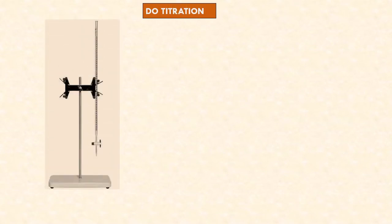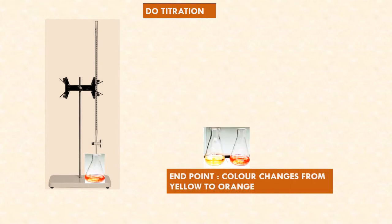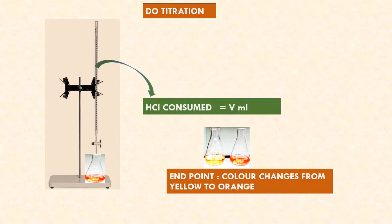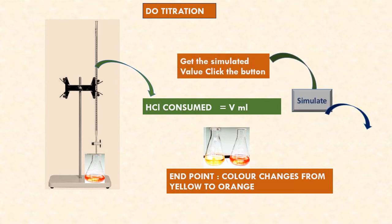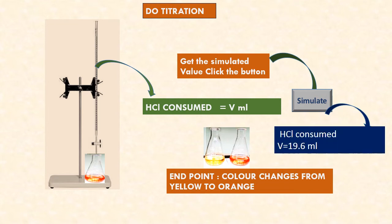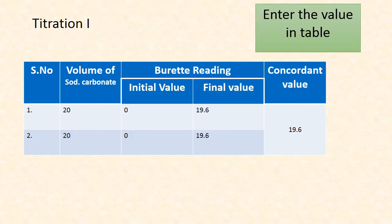Now let us do the titration. The burette is filled with HCl solution. Upon titrating, the yellow color slowly turns orange — that is the endpoint. Note the HCl consumed as V ml. Upon simulation, the value obtained is V = 19.6 ml.